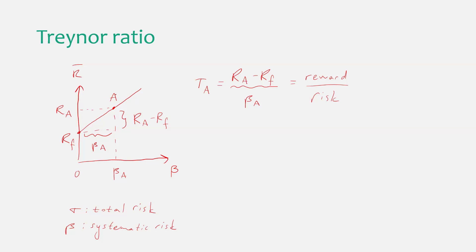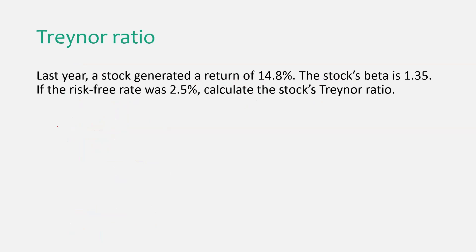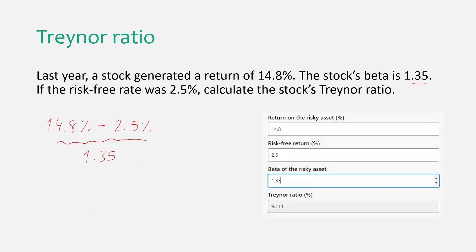Let's do a simple example. We have the same stock as before, yielding 14.8%, with a risk-free rate of 2.5%. This time we divide by the stock's beta, which is given as 1.35. We also have a Treynor Ratio calculator on our website — the link is in the video description.